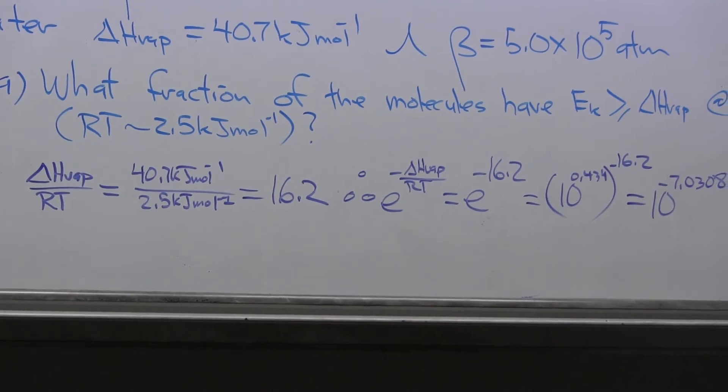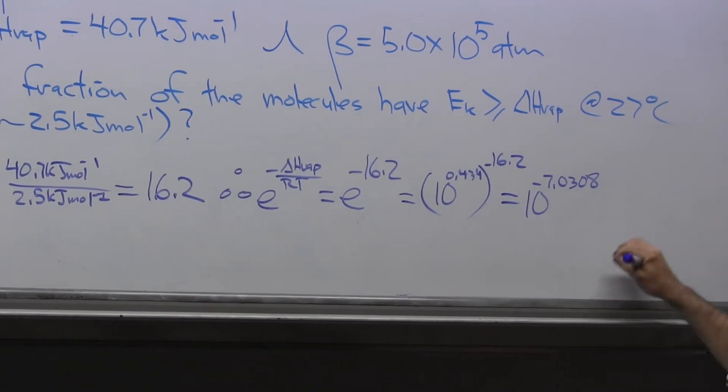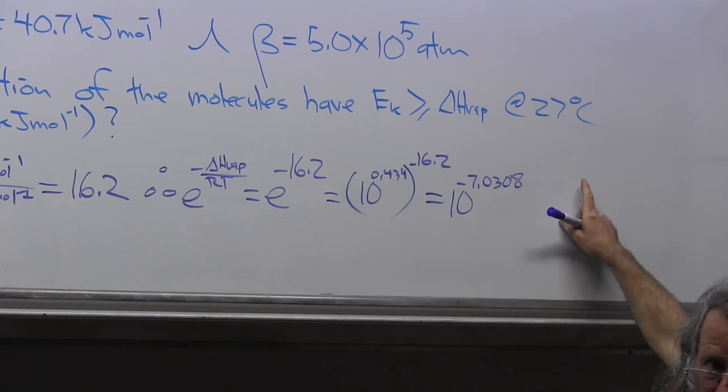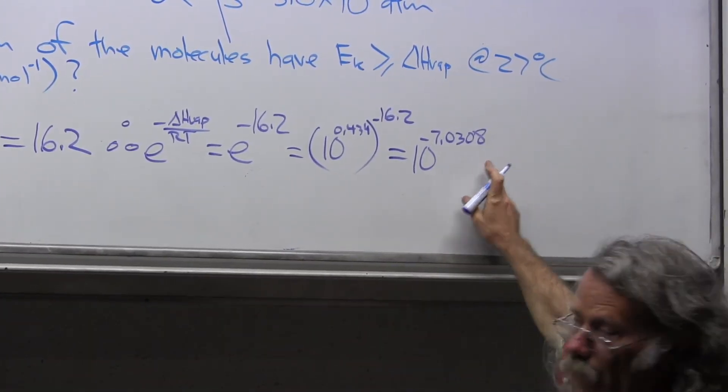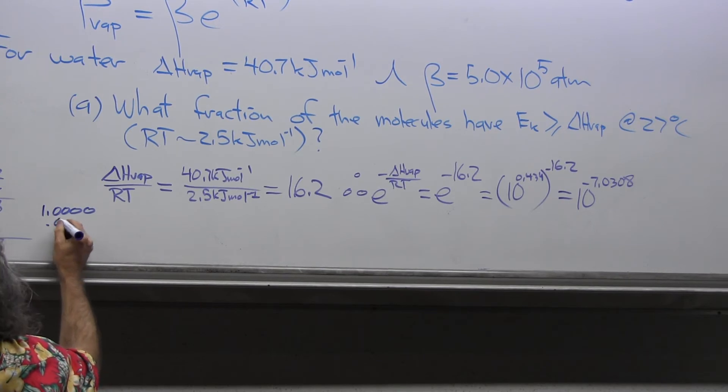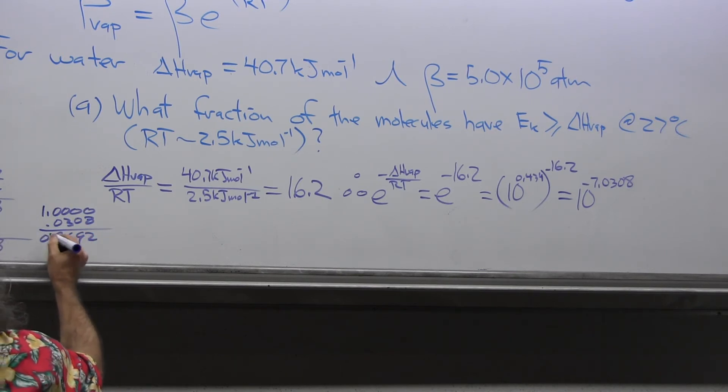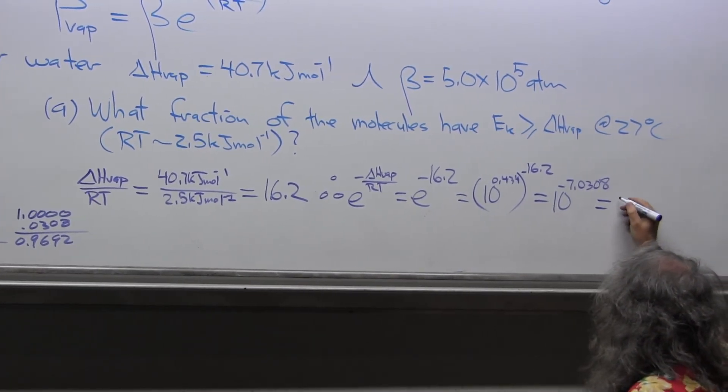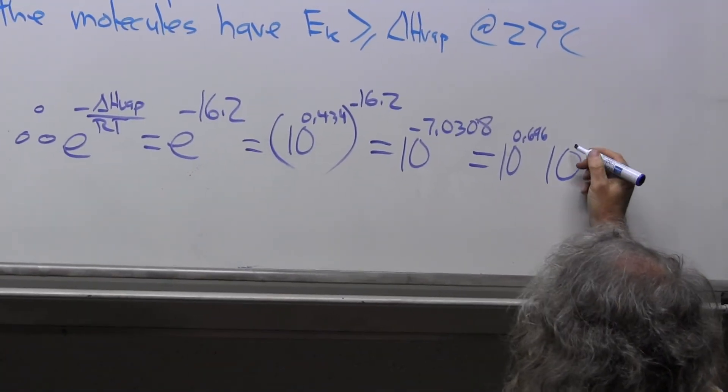That means this equals 10 to the minus 7.0308. Now we're going to draw upon previous exercises in the characteristic mantissa term where I have to express this in terms of some positive number times a characteristic term where I have just a negative number in the exponent. The characteristic is going to be times 10 to the minus 8. I'll subtract the mantissa term from 1. That's 1.0000 minus 0.0308. That means this can be further factored and expressed as 10 to the 0.9692 times 10 to the minus 8.